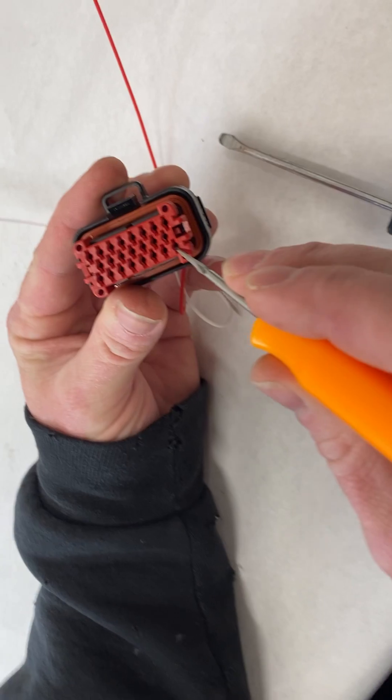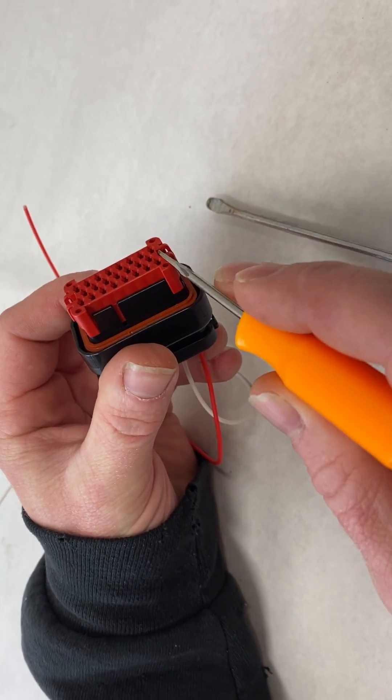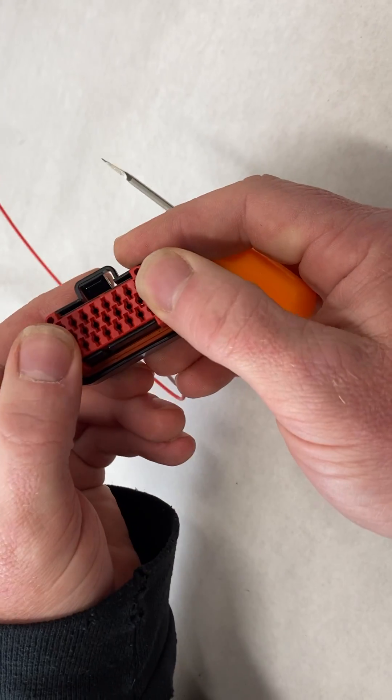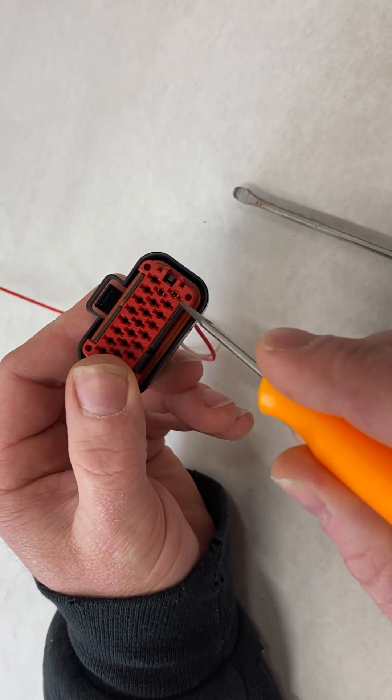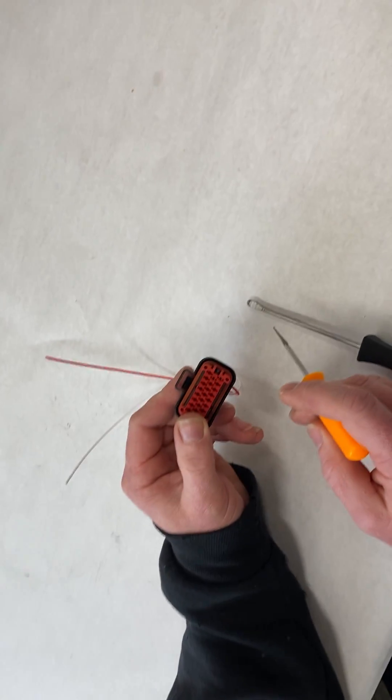It'll be almost level with this black piece. Once you snap this red retainer down, you should see it. See how they're very close to the red retainer? That means you have the terminals in correctly.